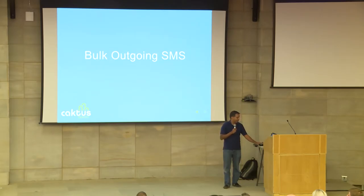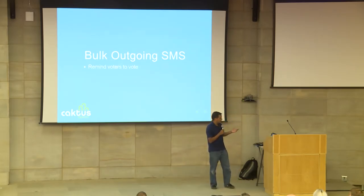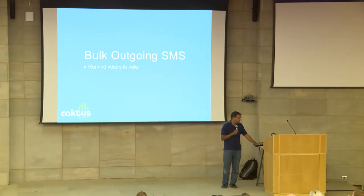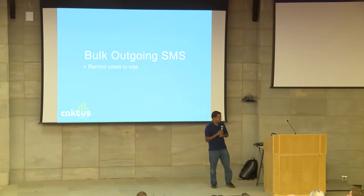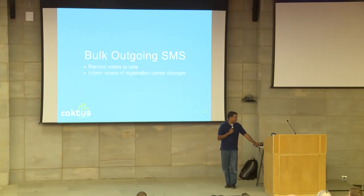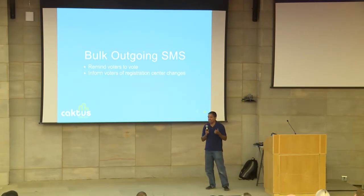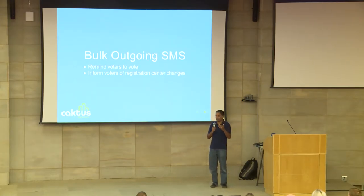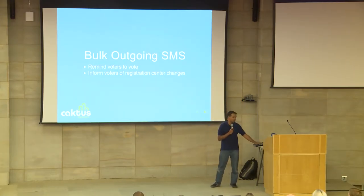Because we had everyone's phone number in our system, we could do cool things like remind voters to vote. On the day and day prior to elections, we sent 1.5 million text messages to all voters reminding them to vote. Finally, there were also registration center changes — a few registration centers were bombed prior to elections, so changes had to be sent to voters saying their registration center was closed and they'd been moved to another one.